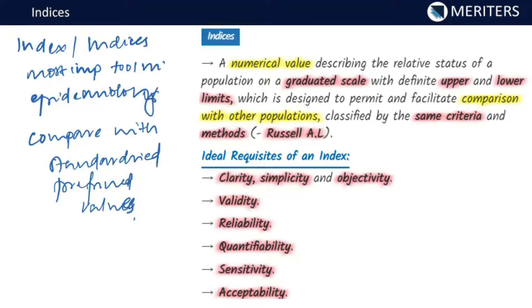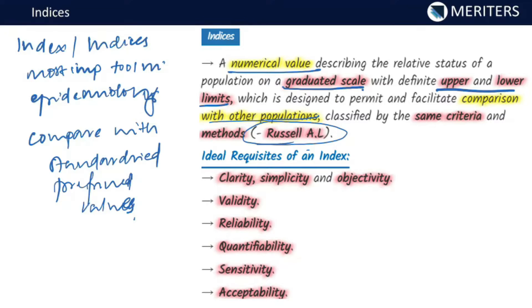By definition, an index is a numerical value describing the relative status of a population on a graduated scale with definite upper and lower limits, which is designed to permit and facilitate comparison with other populations classified by the same criteria and methods. This definition was given by Russell. Index is always a numerical value — there are no letters, it is always numbers.